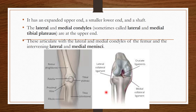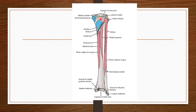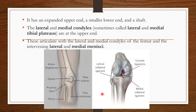The tibia has an expanded upper end, a smaller lower end, and a shaft. The lateral and medial condyles of the tibia — also called the medial and lateral tibial plateaus — are present at the upper end. These condyles articulate with the medial and lateral condyles of the femur respectively, with the intervening lateral and medial menisci.